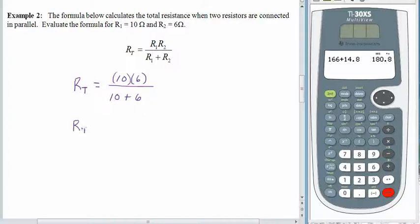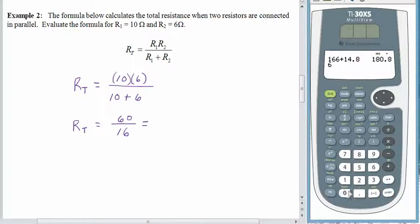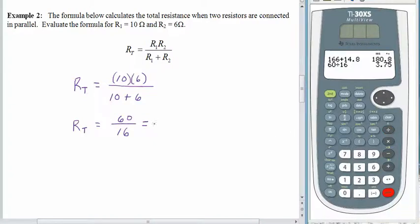Alright. If we were back in the last lesson working on the order of operations step by step, we would point out that the numerator is being held together with invisible parentheses. The denominator is being held together with invisible parentheses. And that we need to figure out the value of the numerator and the value of the denominator before we can perform this division. So let's do that. The value of the numerator, 10 times 6, is 60. The value of the denominator, 10 plus 6, is 16. And then we can divide. 60 divided by 16 is equal to 3.75. 3.75, well this is resistance, so the units should be ohms.